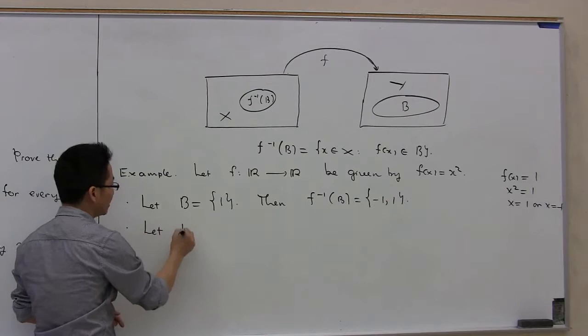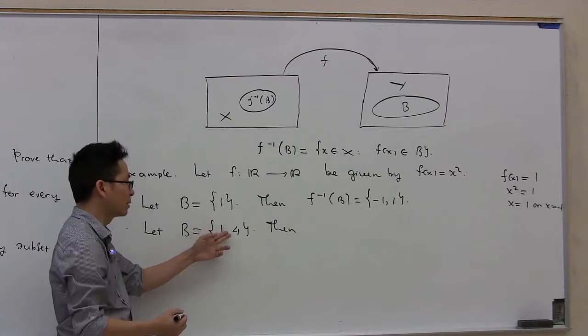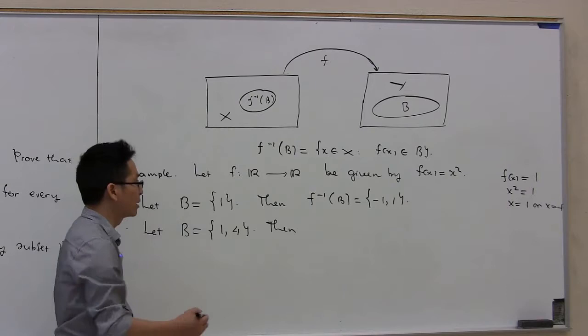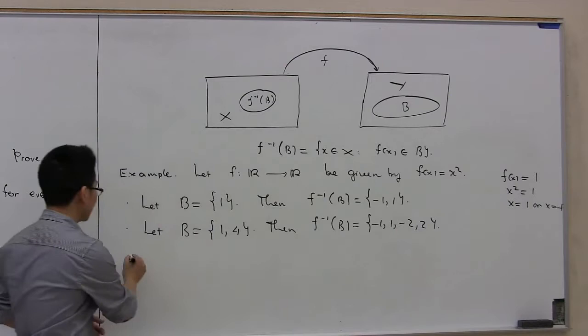In the second example, let B be the set consisting of two numbers, 1 and 4. By a similar approach, we find all x such that f of x is 1 or f of x is 4 — that is, x squared equals 1 or x squared equals 4. Therefore, f inverse of B in this situation consists of four numbers: -1, 1, -2, 2.